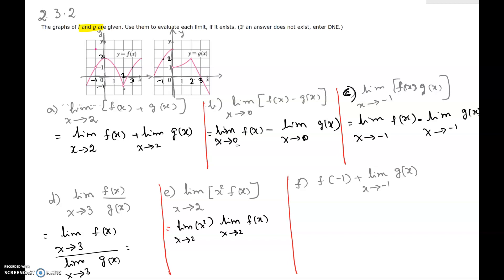Hi, in this video I will be showing you problem number 2 of chapter 2 section 3. The graphs of f and g are given. Use them to evaluate each limit if it exists. If an answer does not exist, enter DNE. The two graphs are given. The first one is for the function f(x), and the second one is for the function g(x).